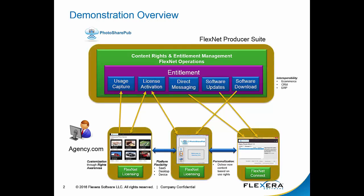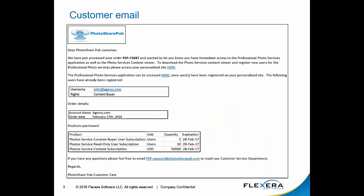The components of FlexNet Operations, licensing, and Connect make up the FlexNet Producer Suite, which can also be connected into an organization's ERP or CRM system. We'll start the demonstration from when an order has been placed and fulfilled. FlexNet Operations will send an email to the customer that has all the relevant information on what they need to get up and running.